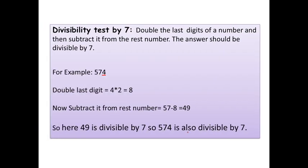Now, let us see the divisible test by 7. Double the last digits of a number and then subtract it from the rest number. The answer should be divisible by 7. For example, 574. The last digit is 4. Double last digit is equals to... we will double the 4 is equals to 8. Now, subtract it from the rest number. Is equals to 57 minus 8 is equals to 49. So, here 49 is divisible by 7. So, 574 is also divisible by 7.